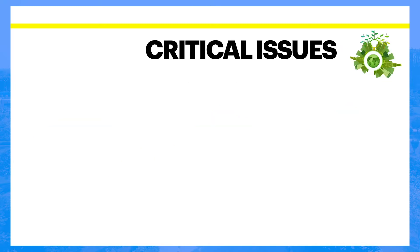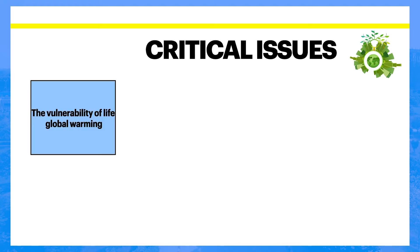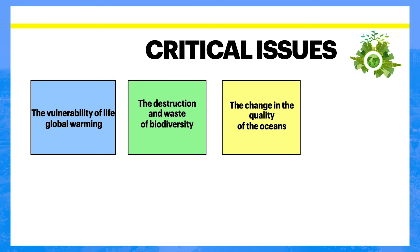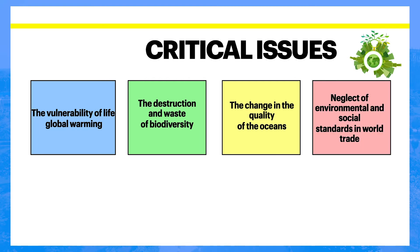In practice, a balance between these objectives is important and necessary for government to address. The vulnerability of life and global warming has been highlighted by the breakdown of the stratospheric ozone layer and the accumulation of gases that cause the greenhouse effect. The destruction and waste of biodiversity through damage and poisoning of natural living spaces, as well as direct eradication by human activities, is a critical concern. Changes in the quality of the ocean are caused by pollution, overfishing, and rising temperatures from energy generation and industrial processes, with consequences for coral reefs and sea currents. Neglect of environmental and social standards in world trade is due to different environmental and social regulations which permit lower standards in developing countries.